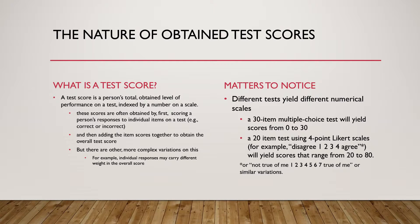A 30-item multiple-choice test is going to yield scores from 0 to 30, whereas a 20-item test using a four-point Likert scale — remember, a Likert scale is a scale that goes how much do you agree with something on a four-point scale — could yield scores that range from 20 to 80.